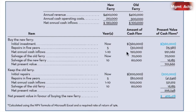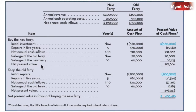The initial investment is $360,000, so the net present value of that is $360,000 today. Repairs in five years are $30,000, and there's the net present value of those repairs. Net annual cash inflows of $190,000 for years one through ten come to a net present value of $991,062. The salvage value of the old ferry — $70,000 now — has a net present value identical to its current value since at t=0, present value equals face value. The salvage value of the new ferry in ten years is $60,000, which equals $16,000 today.